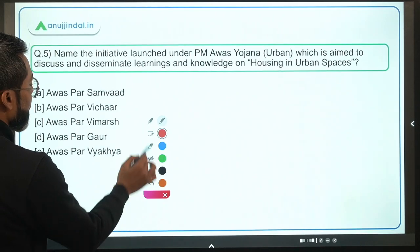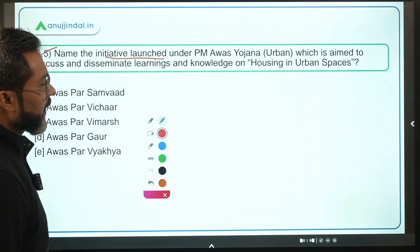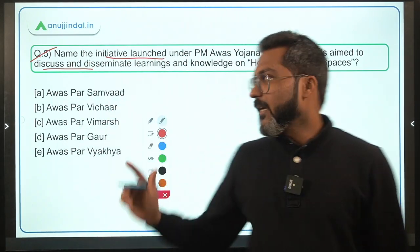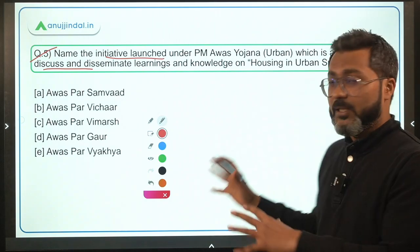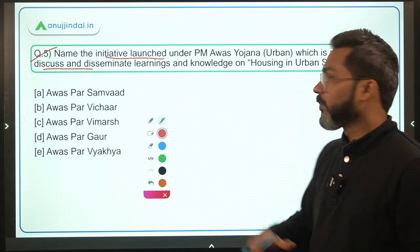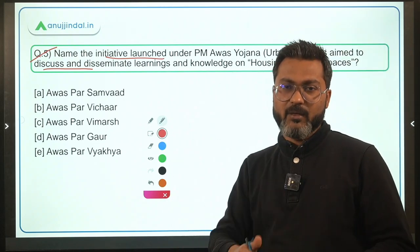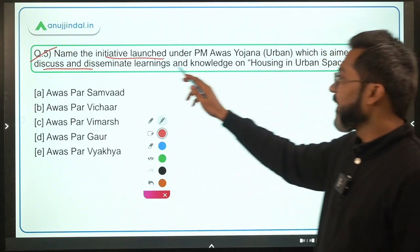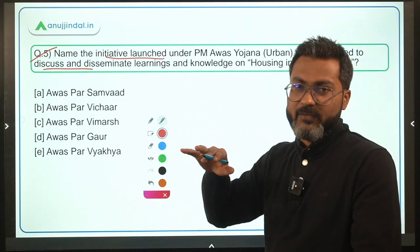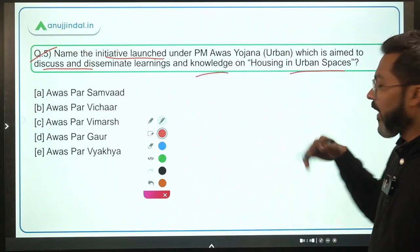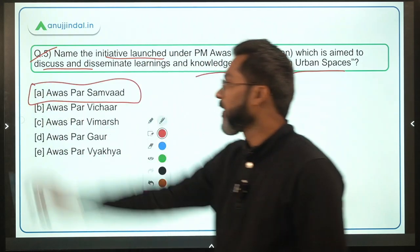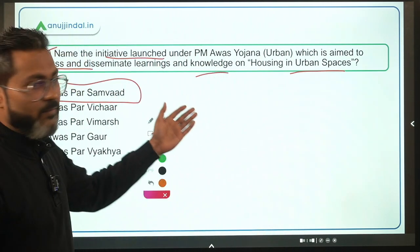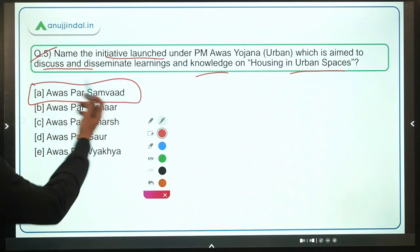Question 5: Name the initiative launched under Pradhan Mantri Awas Yojana Urban, aimed to discuss and disseminate learnings and knowledge on housing in urban spaces. This initiative was launched in 2021 by the Ministry of Housing and Urban Affairs, headed by Mr. Hardeep Singh Puri. The name of the initiative is Aawas Par Sambaad. Option A is the correct answer.